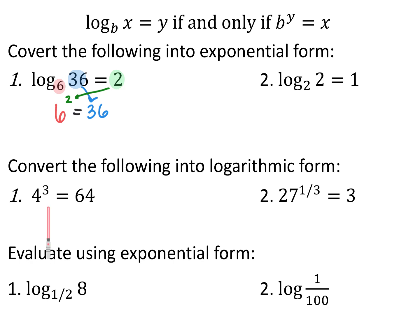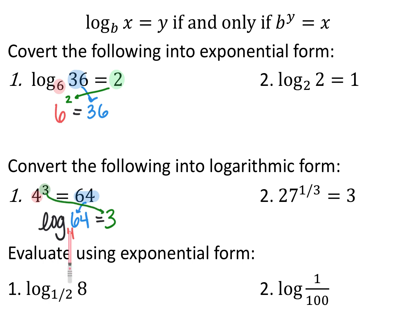If we wanted to go the other way — if we have 4 cubed is equal to 64 and want to convert that into logarithmic form — same idea: the base of the exponent becomes the base of the logarithm, written as a subscript. So log base 4, and then input and output switch. Originally 64 was our output, so it now becomes our input of the logarithm, and 3 was our input of the exponential, so it becomes the output. What do I have to raise 4 to to get 64? I have to raise it to the power of 3.